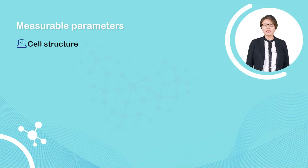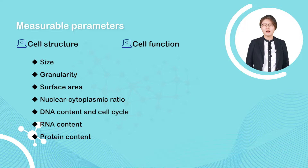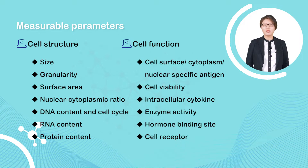Flow cytometry is now widely used for basic cell biological research. It is capable of measuring a variety of cellular characteristics, such as surface and intracellular molecules, secreted factors, DNA content, and mitochondria, etc. It also allows for detection of cellular function and multiple parameter analysis of single cells to characterize and define different cell types in a heterogeneous cell population.